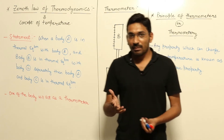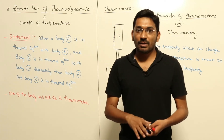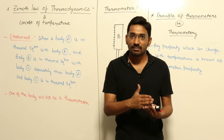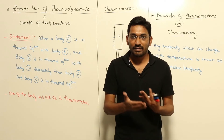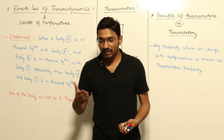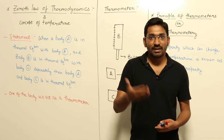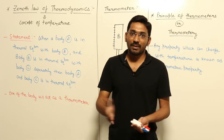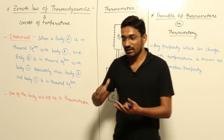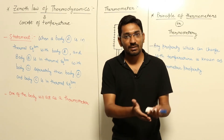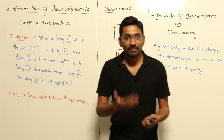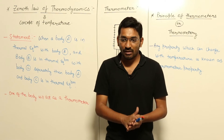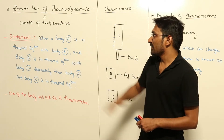After completing the introduction of thermodynamics, we already finished the basics part: what is a system, what is surrounding, what are the various processes, what are the various types of systems, what are the various properties - intensive and extensive - what are the main characteristics of a property, what is the thermodynamic cycle, what is a reversible and irreversible process, and the meaning of degree of freedom. We covered all this in our basics of thermodynamics. Now we move one step ahead to the second chapter.